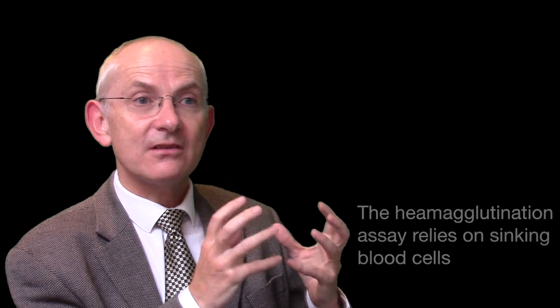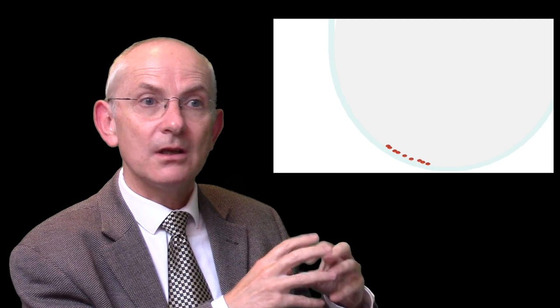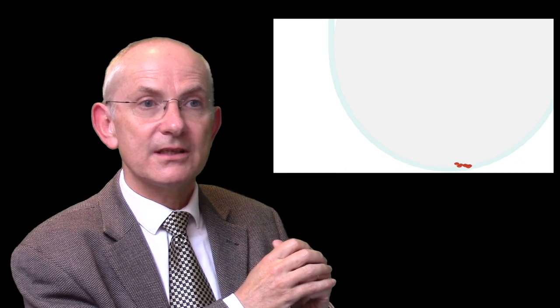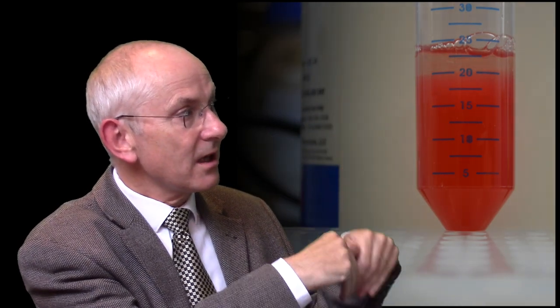This assay relies upon the very convenient fact that we can see what happens to red cells with our naked eye when they're in a vessel such as a round bottom well. On their own, they'll naturally sink to the bottom and form a button at the very tip. As you can see here, the cells are settling out under gravity and sliding to the very bottom of the tube.